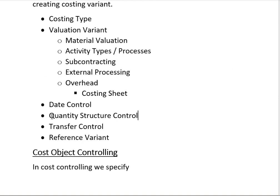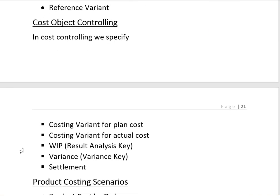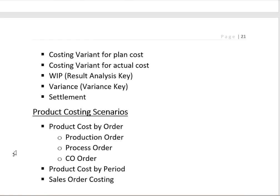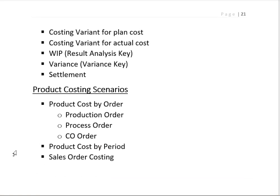In Quantity Structure Control we specify whether we are in a process industry or discrete manufacturing industry. Transfer Control and Reference Variant are used to specify the reference variant. In Cost Object Controlling, we specify the Costing Variant for plan cost, the Costing Variant for actual cost, and how Work in Progress will be calculated, as well as variance and settlement.